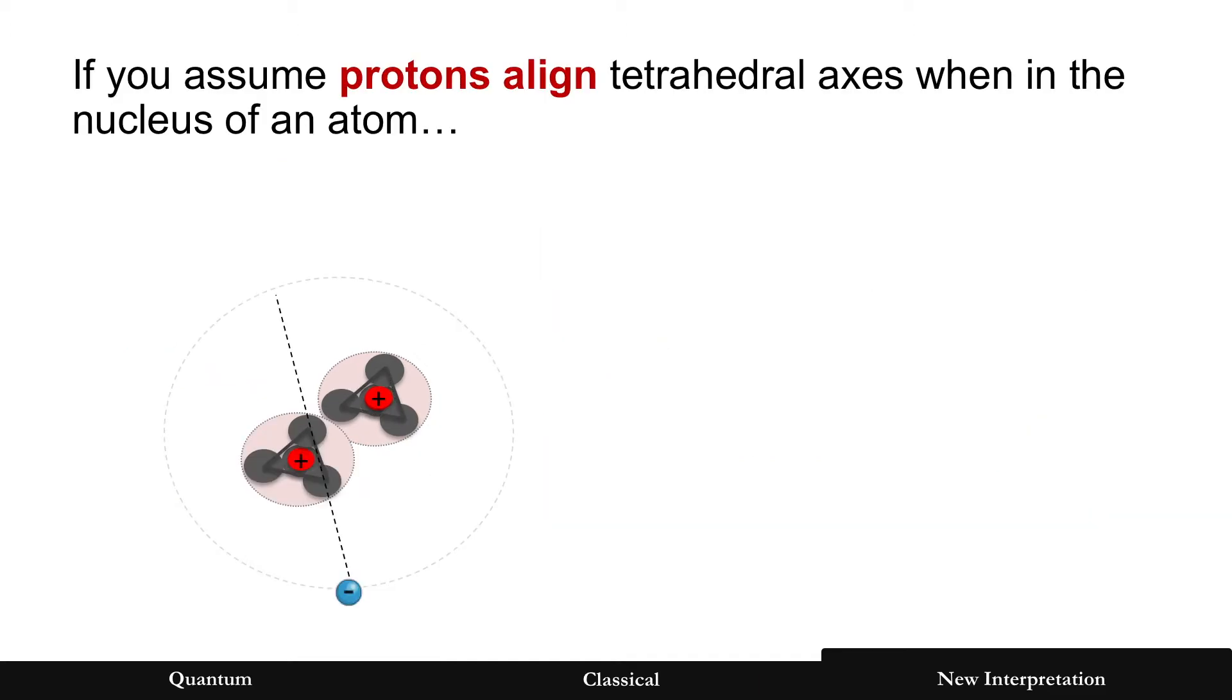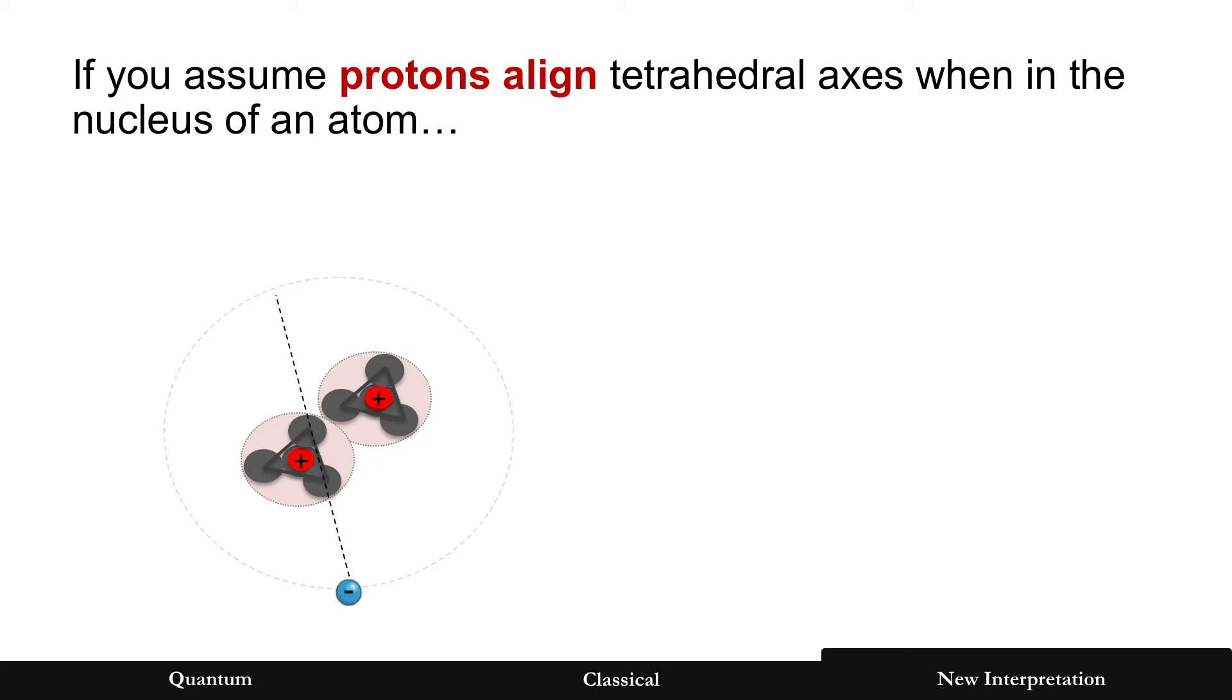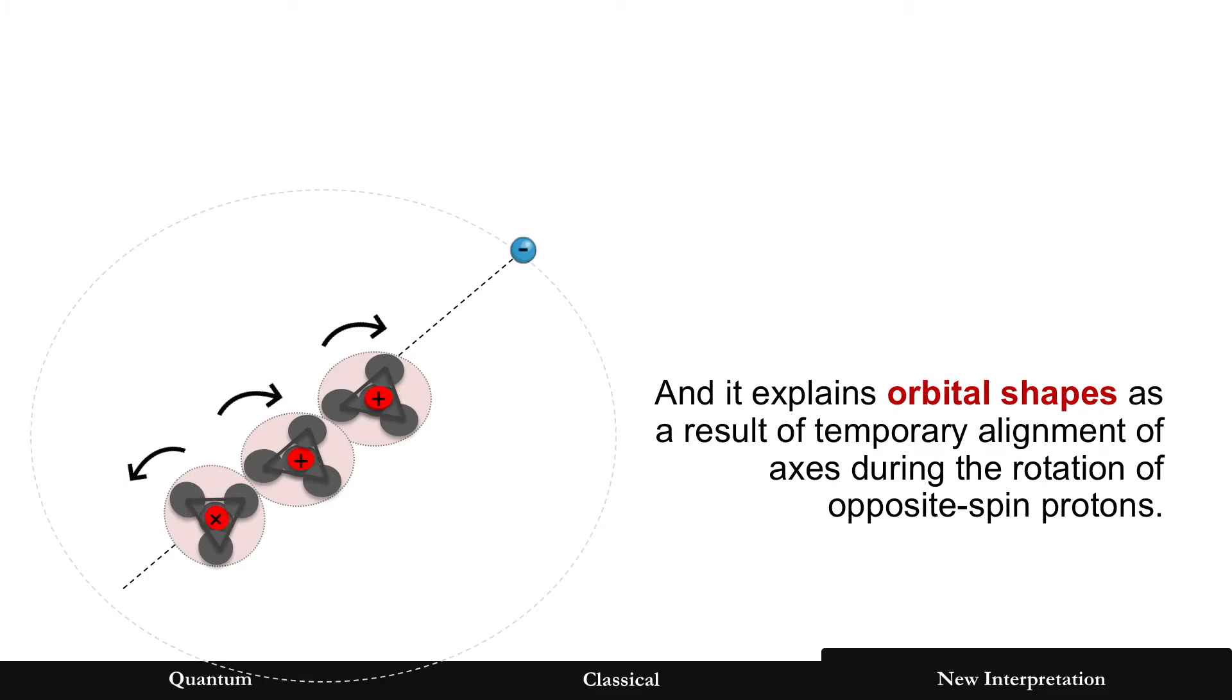And also, if you assume that protons align their tetrahedral axes when in the nucleus of an atom, then it creates a stronger repelling force when they're aligned, creating the different orbital levels. And furthermore, that same spin can explain orbital shapes as a result of temporary alignment during the rotation of opposite spin protons.